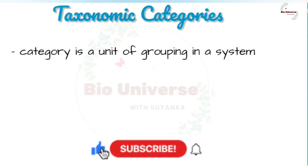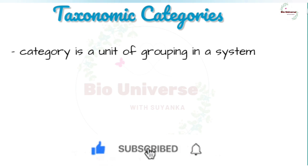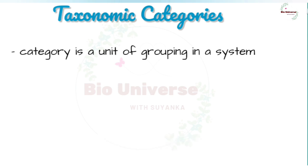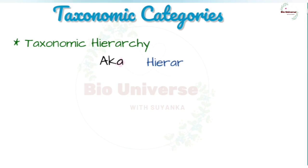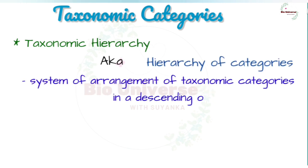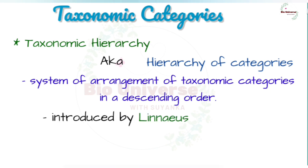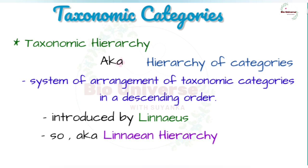A taxonomic category is a unit of grouping of any level used in taxonomy or classification of organisms. Usually there are seven obligate and a few intermediate categories used in taxonomy. Hierarchy is a system in which members of a type are organized in ranks one above the other. The hierarchy of categories, or taxonomic hierarchy, is the system of arrangement of taxonomic categories in descending order depending upon their relative dimension. It was introduced by Linnaeus in 1751 and is therefore also called Linnaean hierarchy or taxonomical hierarchy.